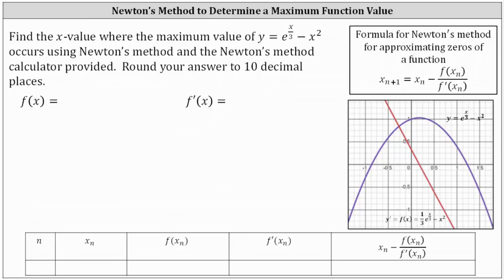Newton's method uses tangent lines to approximate zeros of functions, and we use the formula shown here to make the approximations.